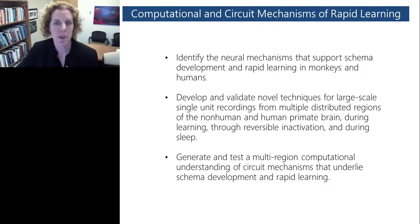The three primary goals of our research program are shown here. They are to identify the neural mechanisms that support schema development and rapid learning in monkeys and humans. We aim to develop and validate novel techniques for large scale recordings from multiple distributed regions of the human and non-human primate brain during learning and through reversible inactivation in the non-human primate and during sleep in both monkeys and humans. Finally, we aim to generate and test a multi-region computational understanding of circuit mechanisms that underlie schema development as well as rapid learning.